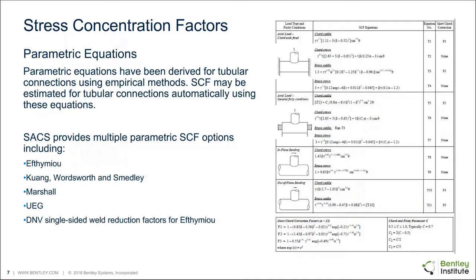The first familiar way to obtain SCFs, particularly for tubular connections, is to use parametric equations. The most common one in API is FMU. The stress concentration factors are generated based on equations that account for geometry and give an estimated SCF. These parametric equations are typically generated from either real-world or FEA models, then curve-fitted to give an approximate SCF. It's worth noting that these SCFs are approximate.